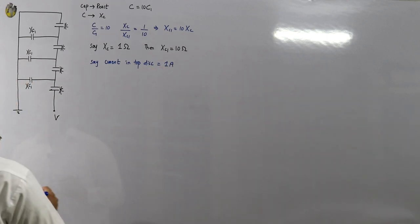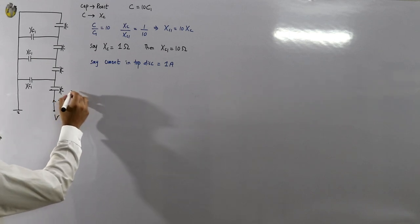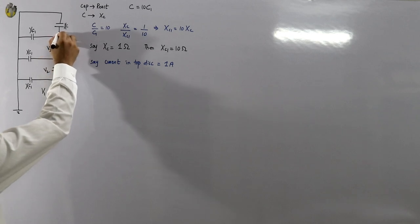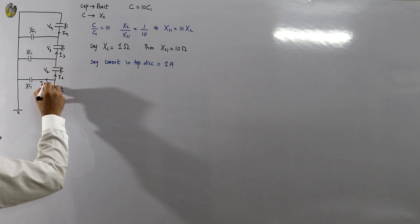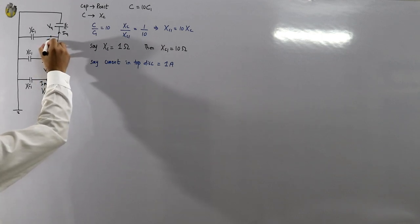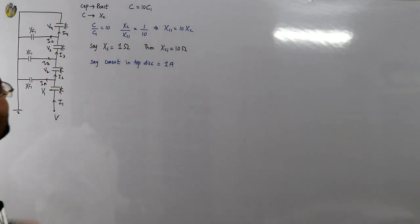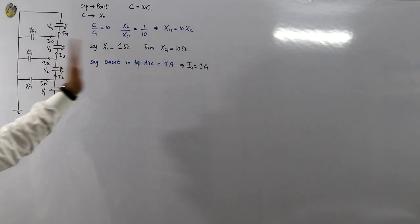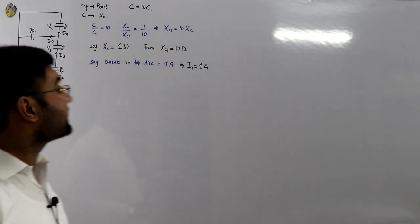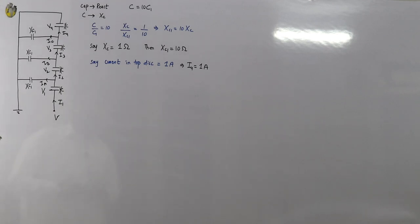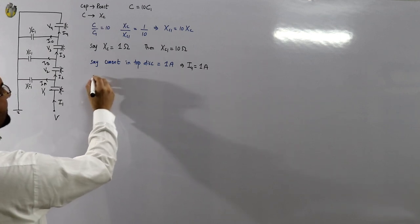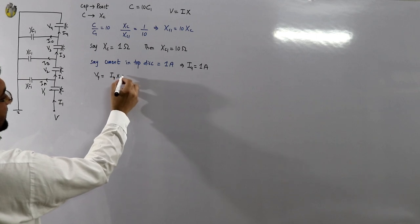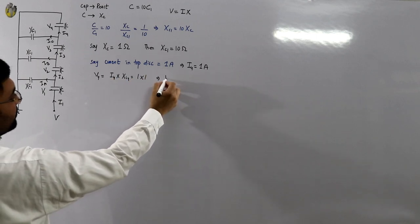With currents I1 through I4, voltage drops V1 through V4, and shunt currents Ia, Ib, Ic, we assume I4 equals 1 ampere (current in the top disc). Using V = IZ (or V = I·Xc), V4 equals I4 multiplied by Xc4, which is 1 × 1, so V4 equals 1 volt.